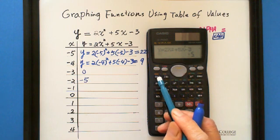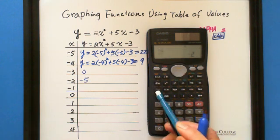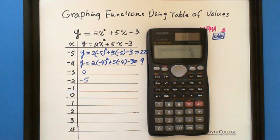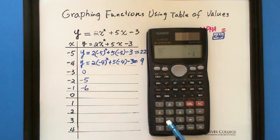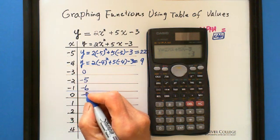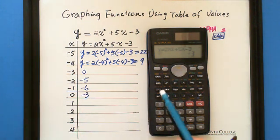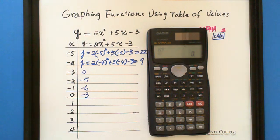Then CALC button. Negative 1. Negative 6. And CALC button. Zero. Negative 3. And CALC button.